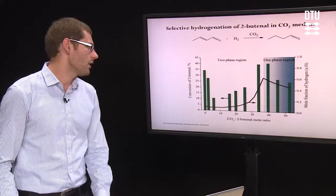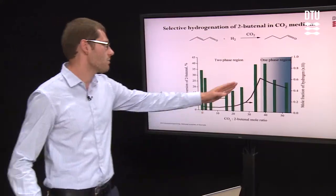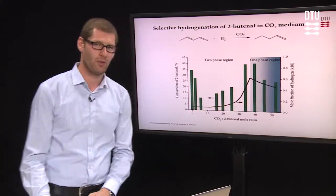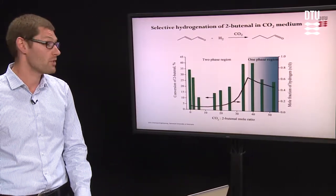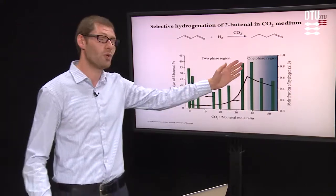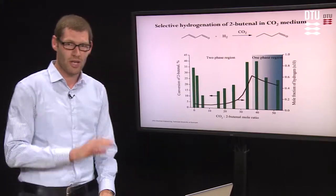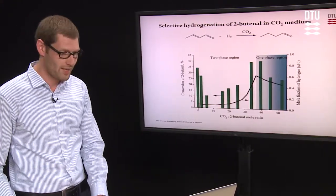The CPA calculations showed that this maximum of conversion is located between 2- and 1-phase region. Further CPA calculations also showed that this maximum coincides with the maximum of hydrogen concentration in the liquid layer, which is in direct contact with the solid catalyst.